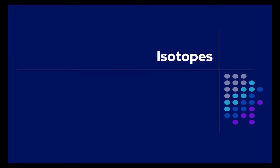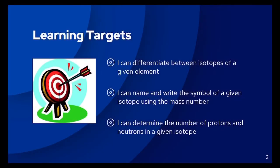In this lesson we will talk about isotopes. Our learning targets for today include being able to differentiate between isotopes of a given element, being able to write the name and write the symbol of a given isotope using the mass number, and being able to determine the number of protons and neutrons in a given isotope.